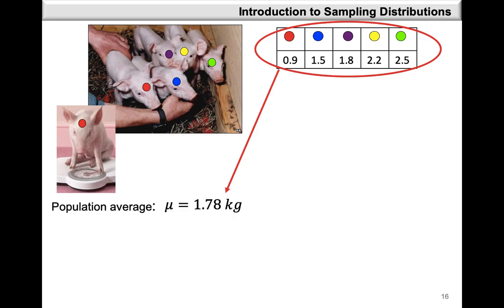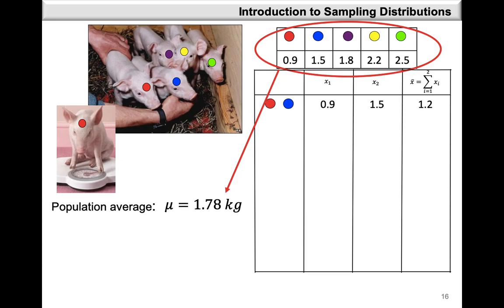What if we decide to look at a sample of two piglets at a time from our population? We take the weight of each piglet in the sampled pair and calculate the sample average. We find that for the first pair, this value of 1.2 is a point estimate for the population average mu.